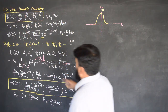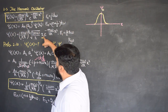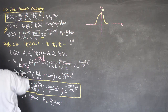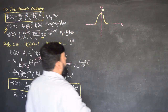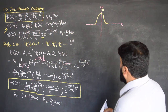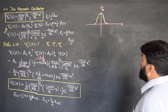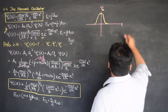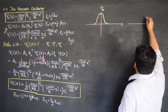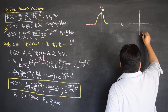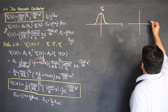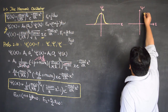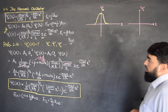This is an odd function — psi_1 is an odd wave function. Psi_0 was an even function. Now I can plot psi_1 of x as well. Let me plot it here again — this is the axis, with x on the horizontal, and we are having psi_1 on the vertical.